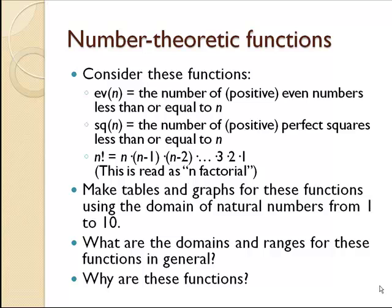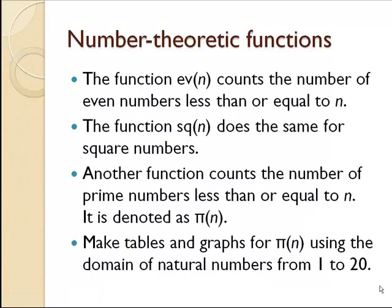So this function ev(n) is a counting function — it counts the number of even numbers less than or equal to n. The function sq(n) is a counting function — it counts the square numbers less than or equal to n. Another function that counts is pi(n). It counts the number of prime numbers less than or equal to n. I'd like for you to make a table and a graph of pi(n) using the domain of natural numbers from 1 to 20.